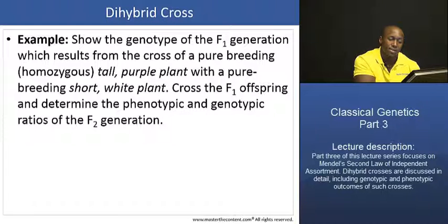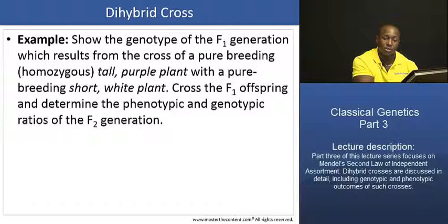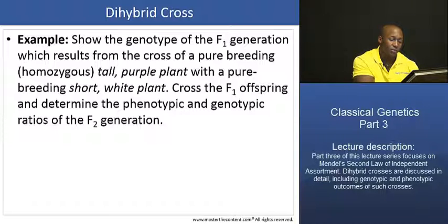So the example on the screen requires us to do the following. We're required to show the genotype of the F1 — the first filial generation — which results from the cross of a pure-breeding tall purple plant with a pure-breeding short white plant. Then cross the F1 offspring and determine the phenotypic and genotypic ratios of the F2 generation.